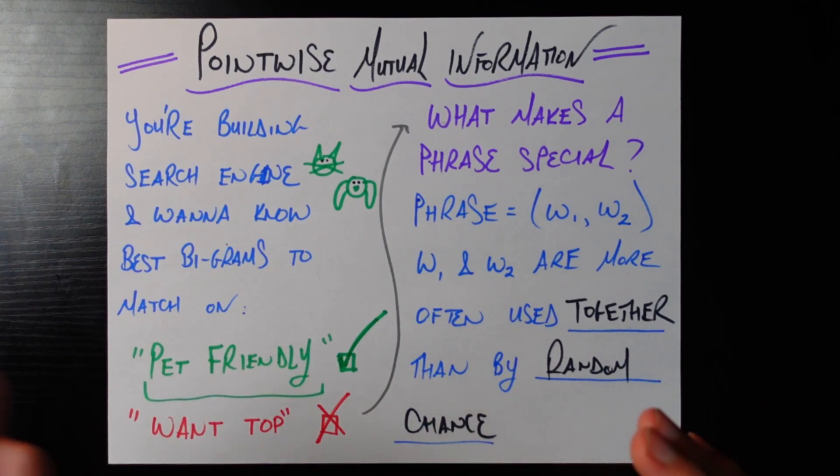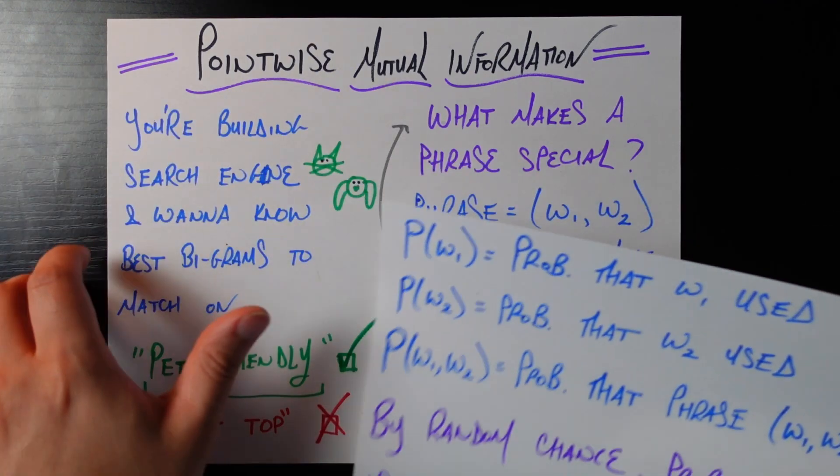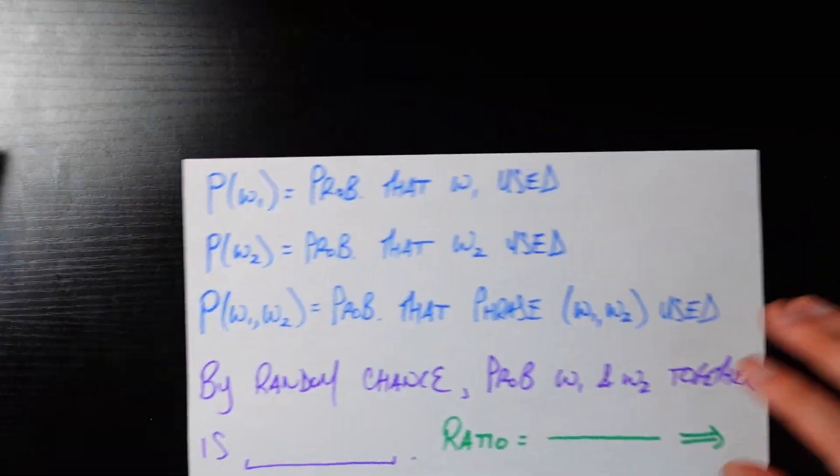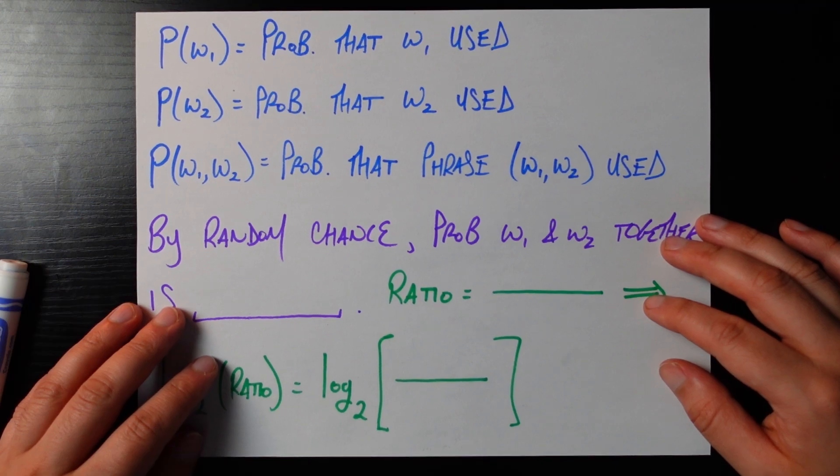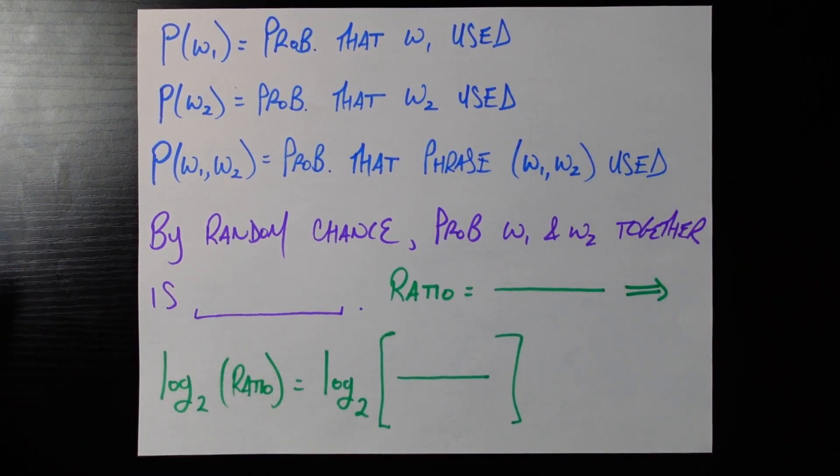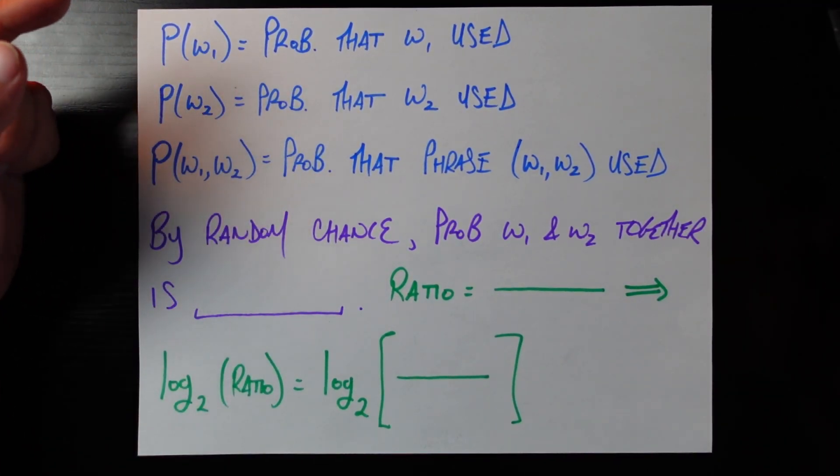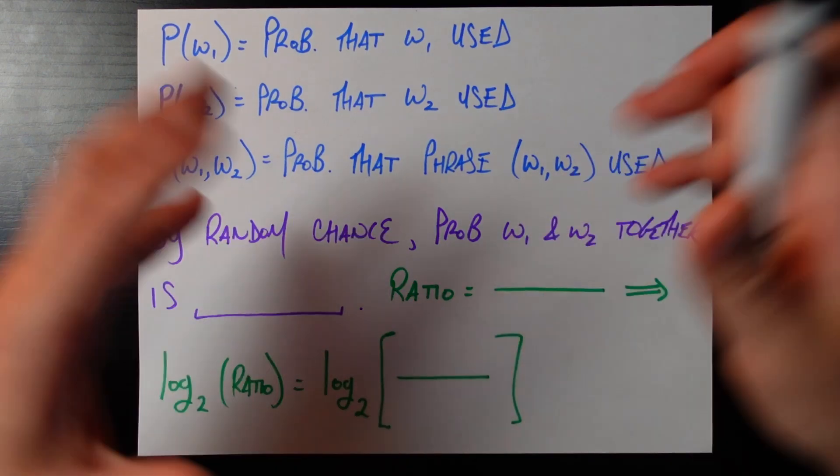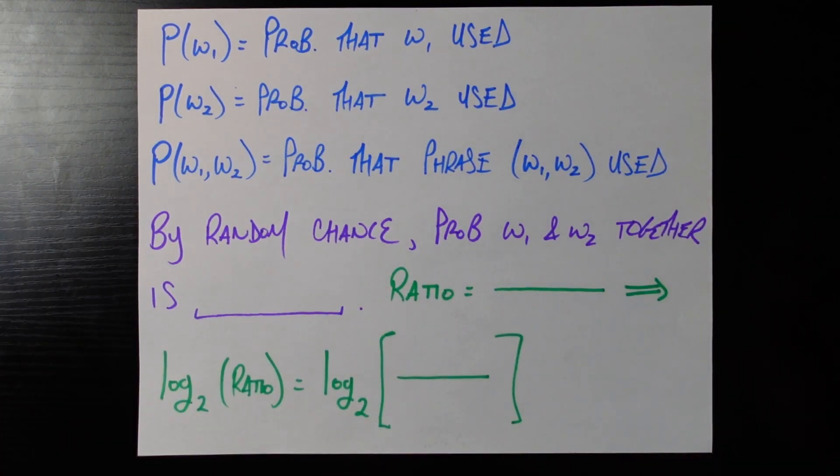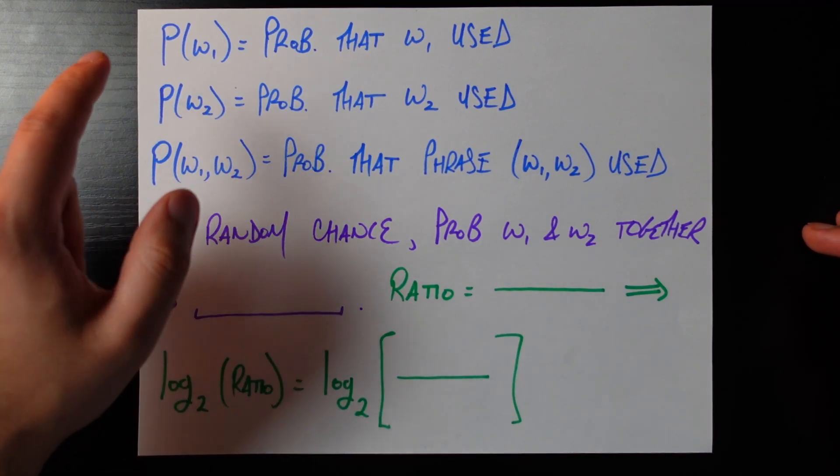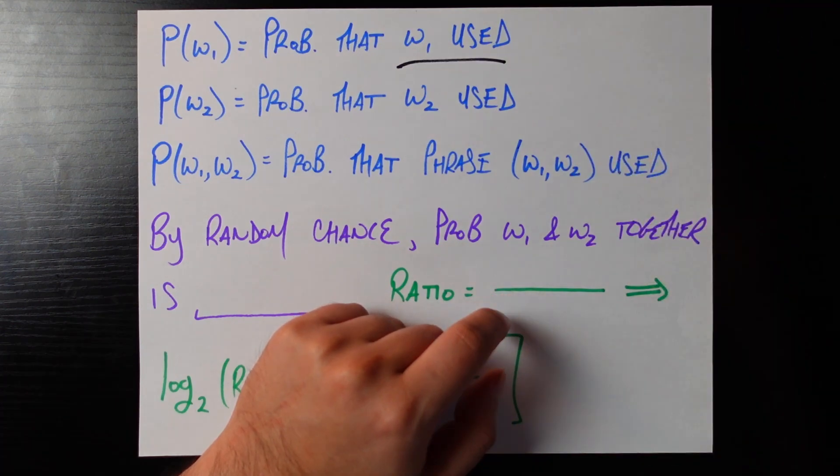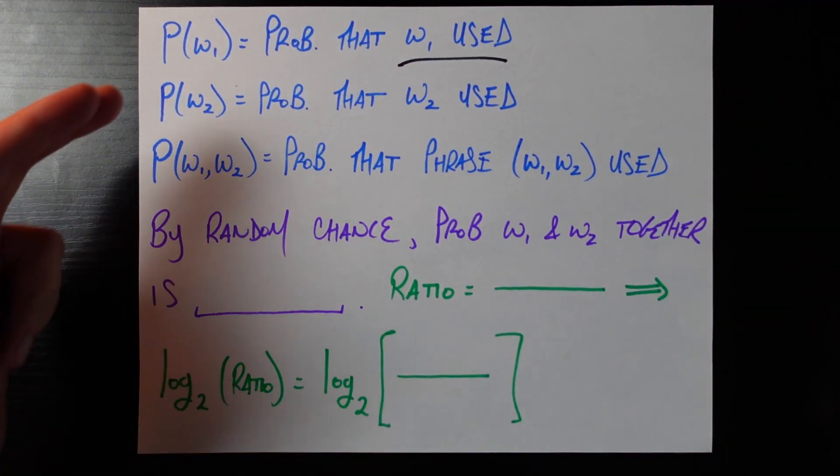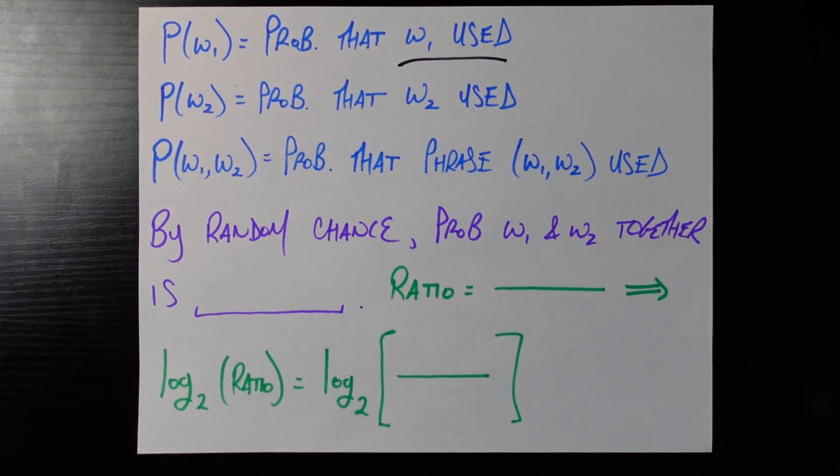And so that's the idea that's what makes a phrase and now we can get into the mathematics of pointwise mutual information which really is not too tricky. We just need to define three quantities. The first is going to be called p of w1. This is the probability that in some very large piece of training data we're going to use for this pointwise mutual information the probability that we see the word w1 or the probability that the word w1 is used. pw2 is just the same exact thing for w2.